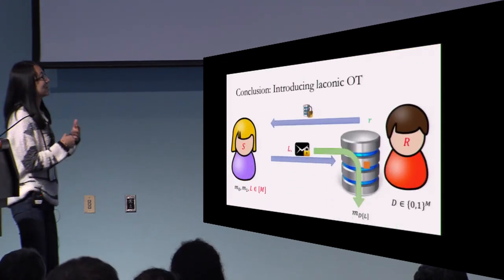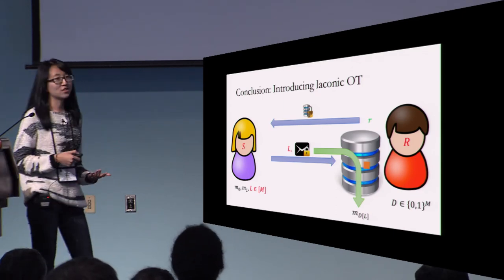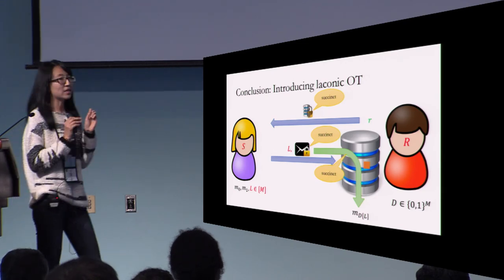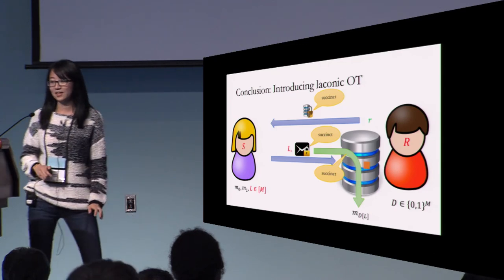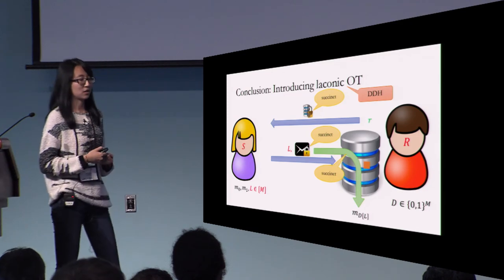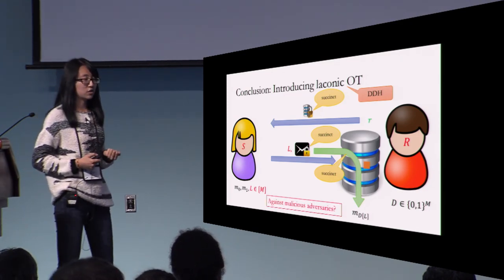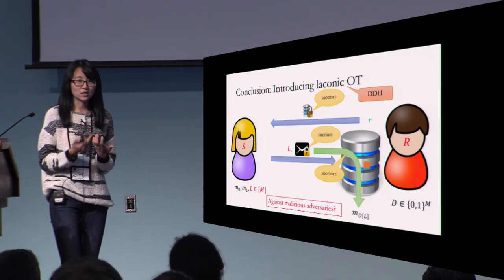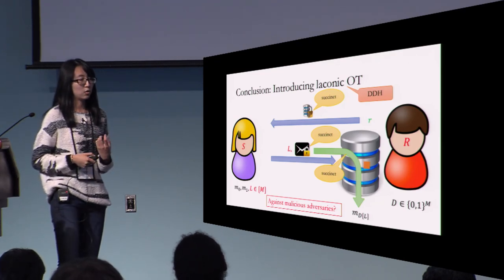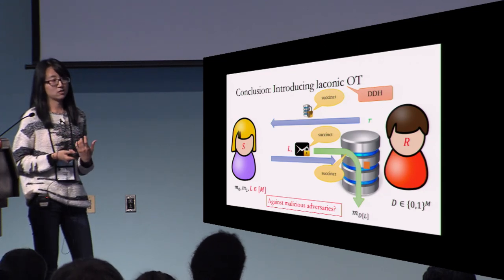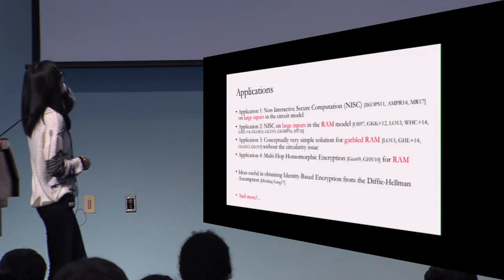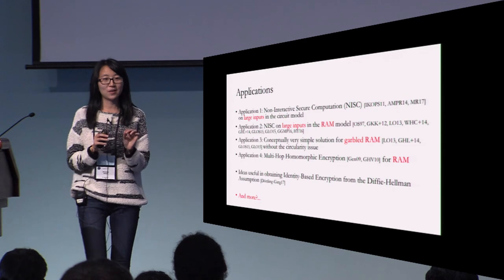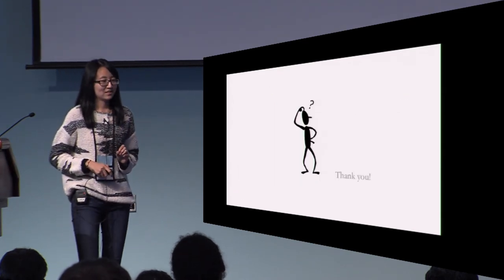To conclude, we introduced this new notion called laconic oblivious transfer. The crucial point is that we can make the communication complexity and computational complexity here independent of the size of the database — it only depends on the security parameter. The main result is that we can construct it from the decisional Diffie-Hellman assumption. The open question is: so far, all that we have done is secure against semi-honest adversaries. We can make it maliciously secure at the cost of more interactions or stronger assumptions, so the open question is: can you make it maliciously secure with the same efficiency and under the same or weaker assumptions? It turns out to be a very powerful tool across many scenarios — can you find more applications? We have some potential applications listed in our paper if you are interested.